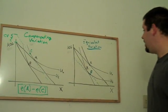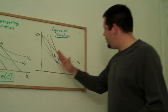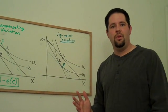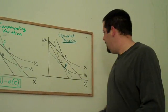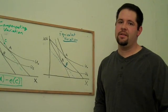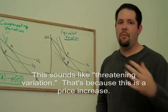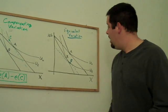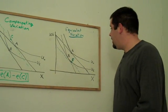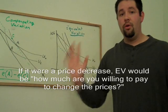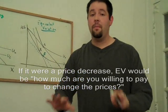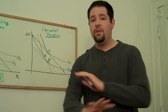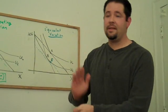The way we're thinking about equivalent variation is that this individual, we ask this individual, we threaten this individual, we say, we're going to change the prices on you. How much are you willing to pay to avoid this price change, or this price increase? And this individual is like, whoa, hold on. That price change will make me worse off. Don't do it, I'm willing to pay X dollars.